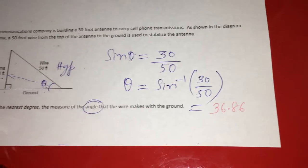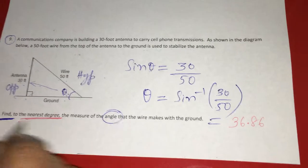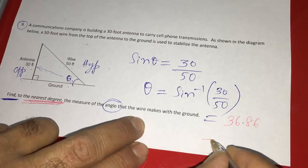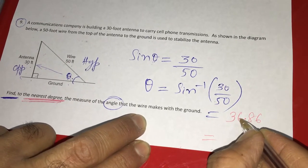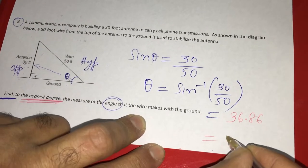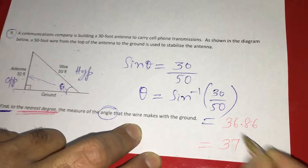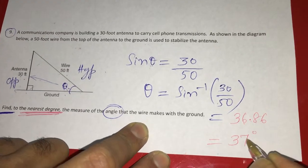But he is asking to find the nearest degree. So nearest degree means this 0.8 is above 0.5, so this 6 makes it 7. So 37 degrees. I have to round up the 6 by one. So that is the nearest degree.